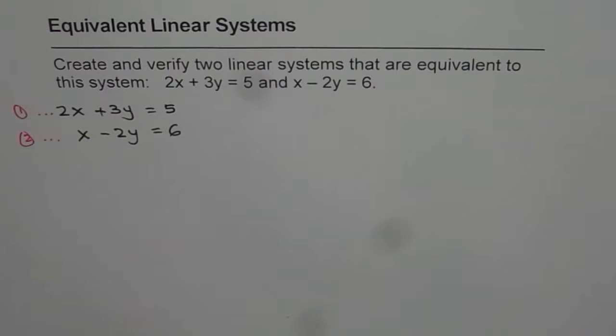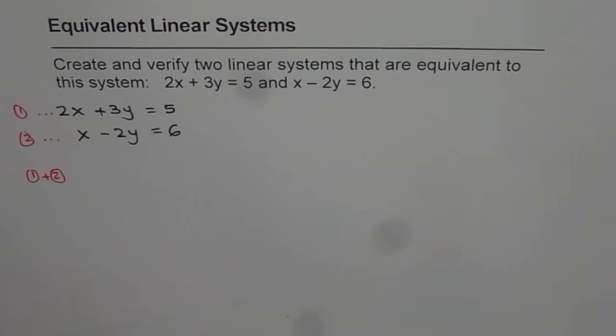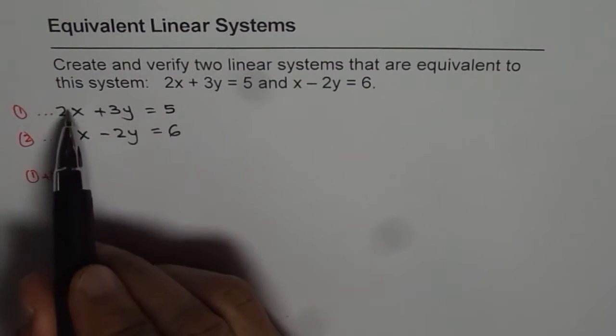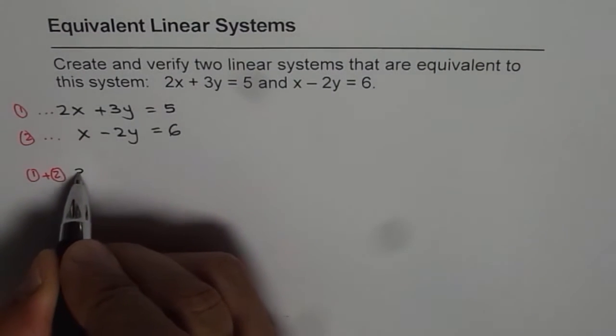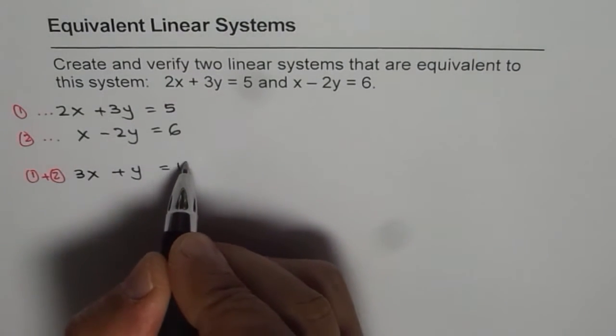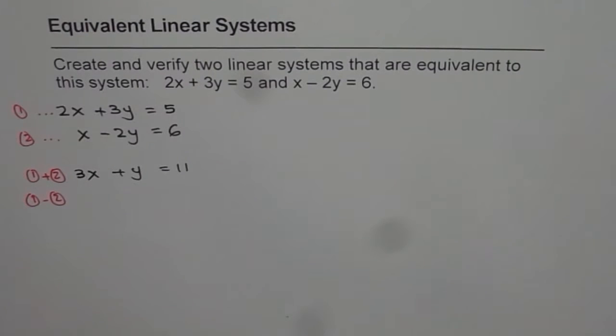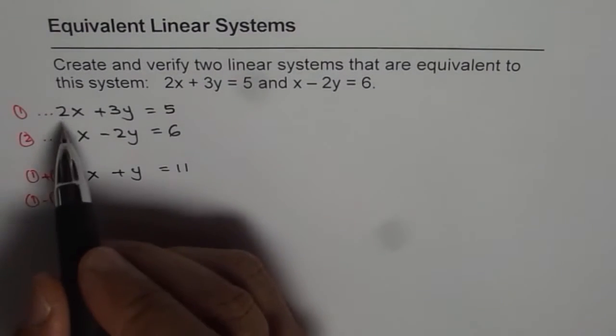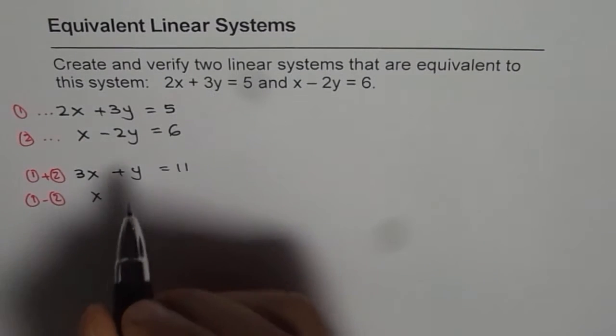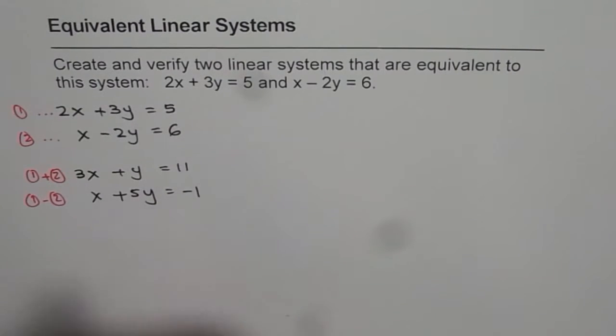We will adopt the methods learned. First we can create by adding and subtracting. What we will do is add equations 1 and 2 and then create our equivalent linear system. If I add them, I get 3x, here I should be y, and 6 plus 5 is 11. And if I subtract them, that means 1 minus 2, I get a set of equations. 2x minus x is x, 3y minus of minus 2y will give me plus 5y and minus 1.